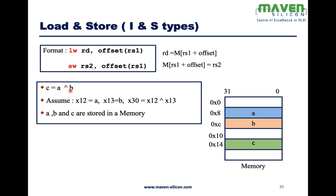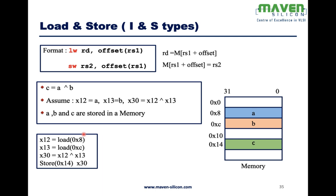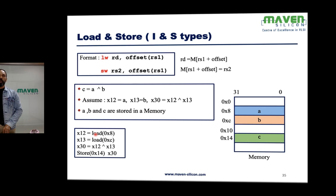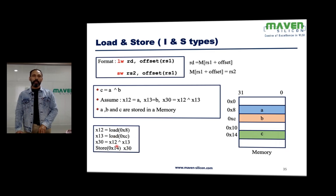Let's look at an example: C = A XOR B. A and B are operands and C is the result. Everything is available in memory, so we read operands from memory, perform the XOR operation, and store the result back into memory. We allocate X12 for A, X13 for B, and X30 for the result of XOR between X12 and X13.